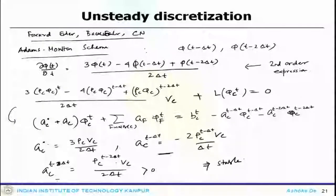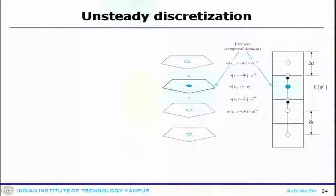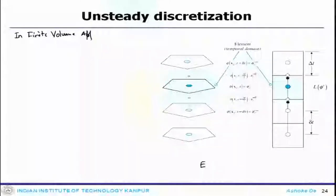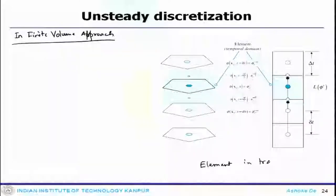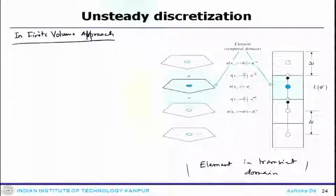Now, looking at the similar implementation in terms of the finite volume approach, these are the elements in the transient domain. The schematic shows an element in the transient domain — the difference from one face to the next is ΔT, and you have the spatial operator. These elements move along the temporal domain.